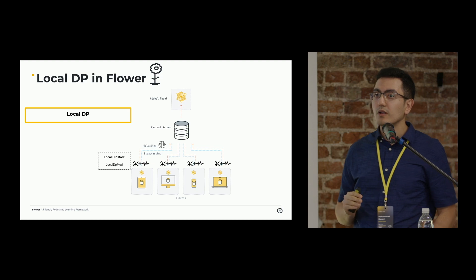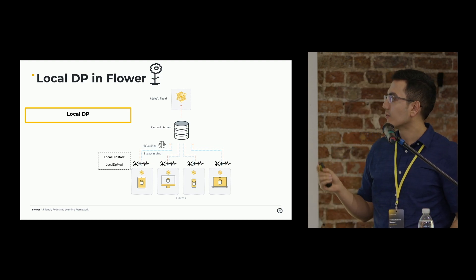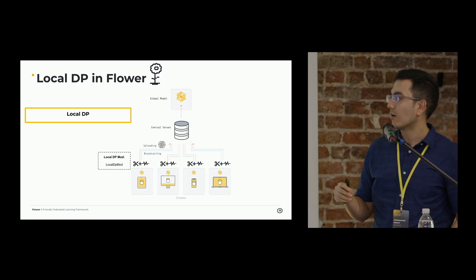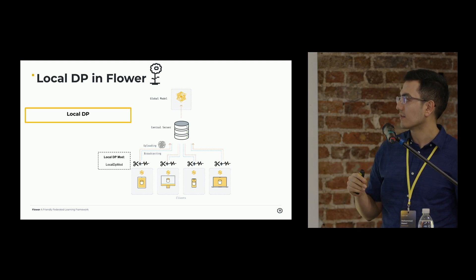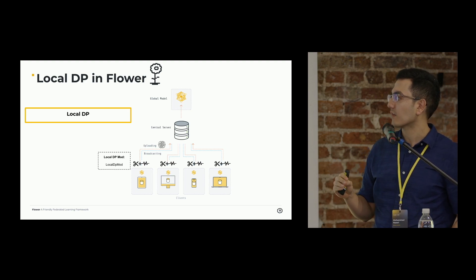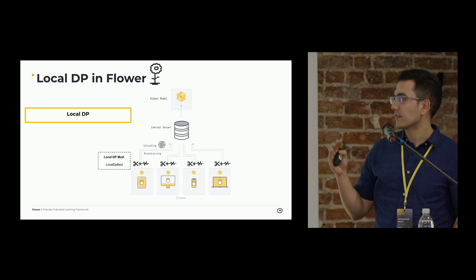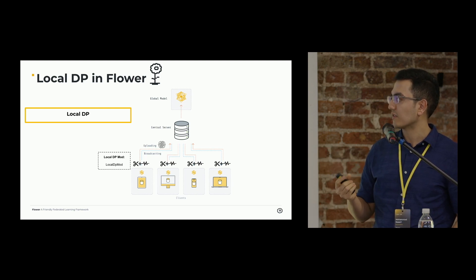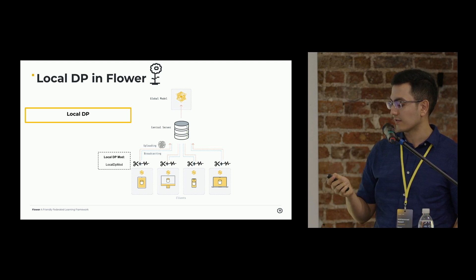For local DP, you need to use the local mods, because the clipping and the noising parts are going to be applied on the client's updates before sending them to the server.